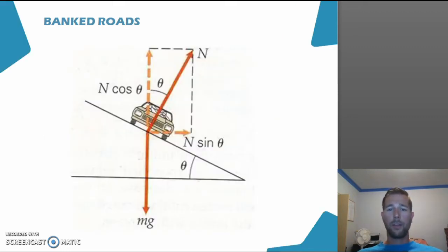When we come to a banked road, we can look at the forces that are acting on the car using the same principles we did before. So let's first start with gravity. Gravity always acts down towards the centre of the earth. In this case the car, the gravity vector component is drawn as such.